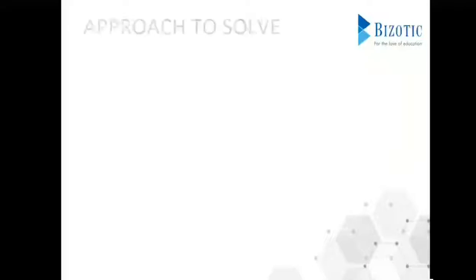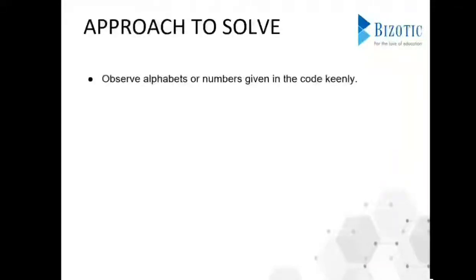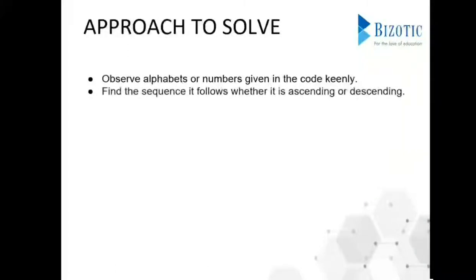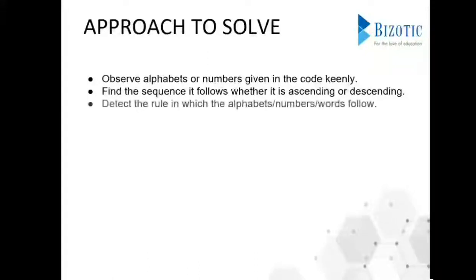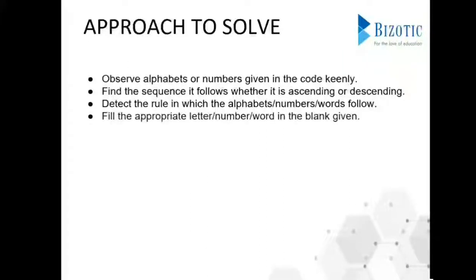Now let's see some of the approaches to solve these kinds of problems. First, we need to observe the alphabets or numbers given in the code very carefully, and then find the sequence it follows. Sometimes it will be in ascending or descending order, so just find the sequence and detect the rule that these alphabets, numbers, or words follow. Finally, fill in the appropriate letter, number, or word in the blank given.